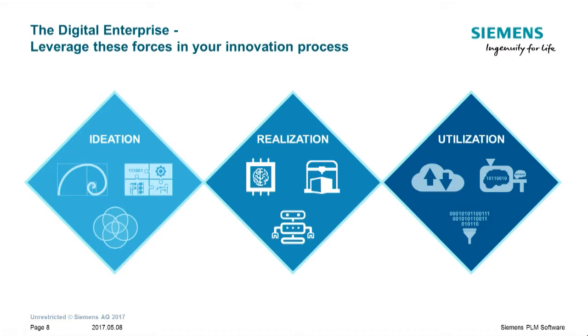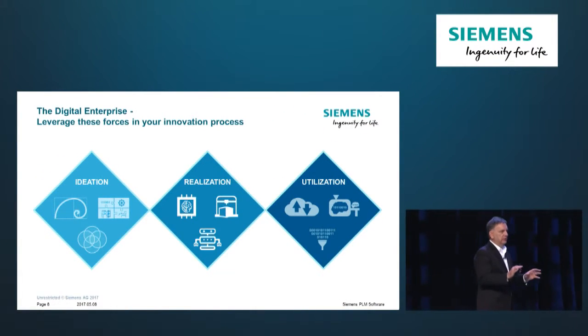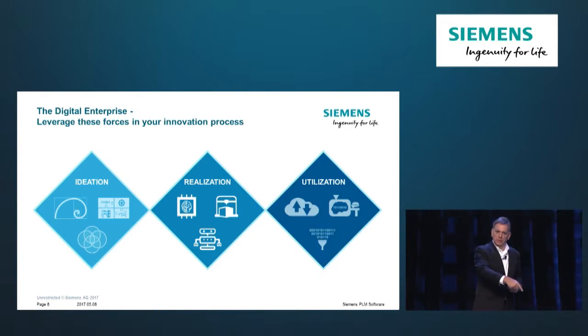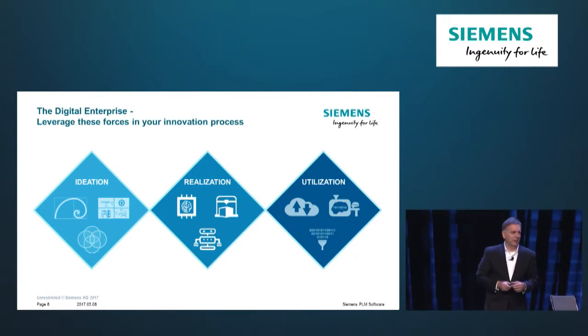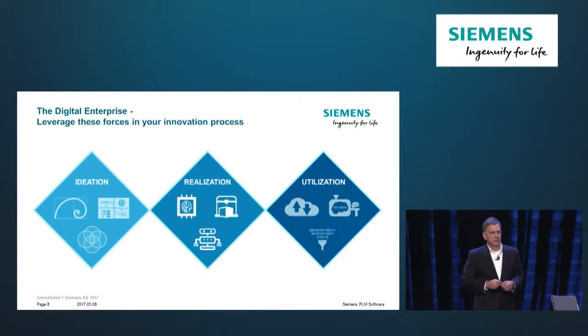We talk about this in three phases: ideation, realization, and utilization. Ideation is that upfront phase of design and R&D. Utilization is the feedback loop — what's happening in the field with the product and how do you bring it back? Many companies can do those two, but many miss the middle part — somebody's got to make it and build it. This is where we think the real value of Siemens lies: not only do we cover all three, but we produce products, make things, and use our own software to do that. As we add more detail, the fidelity of these models gets smarter and better represents that physical twin.